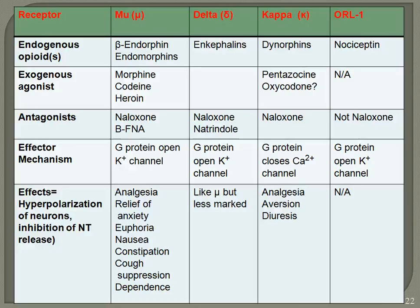This concludes the discussion on the definition and classification of opioid analgesics and receptors. In the next lecture, we will discuss modification of morphine, structure-activity relationships (SAR), and details of other classes of opioid analgesics. Thank you.